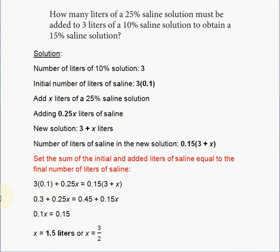All you have to do is solve for x. Remember, x represents the number of liters of solution added — not the saline itself, but the entire solution containing 25% saline by volume. So: 3 times 0.1 is 0.3, plus 0.25x equals 0.15 times (3+x). Now distribute the right side correctly.